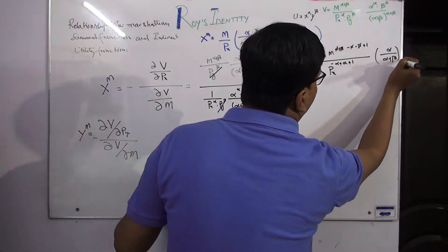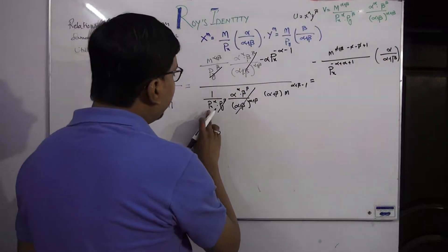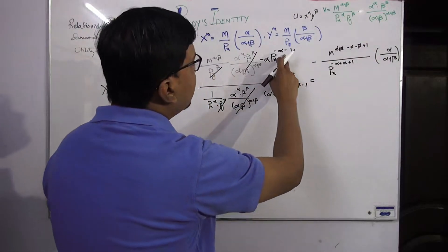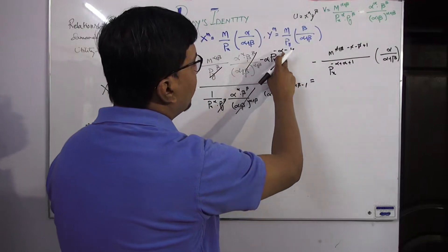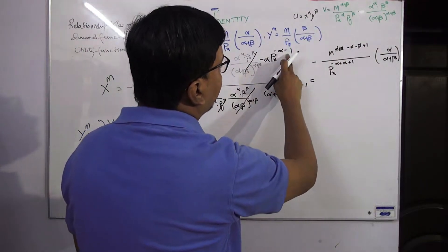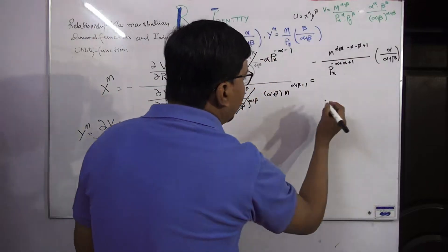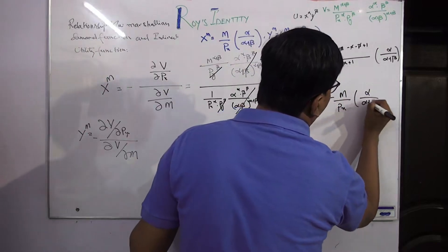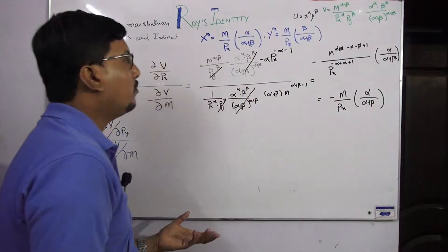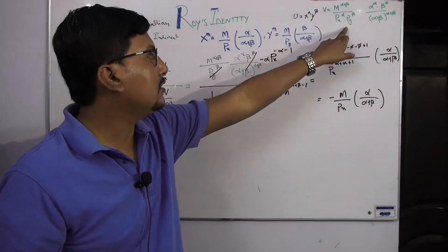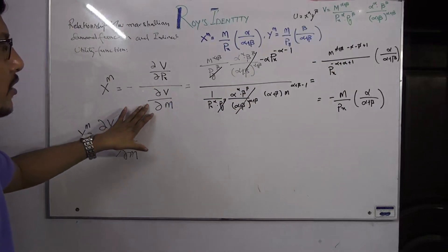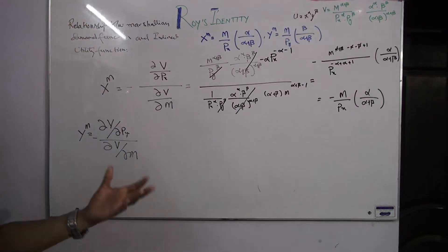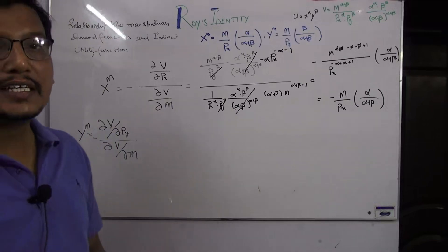For px: px^(−α) comes to the numerator, and with the additional (−1) exponent converting to (+1) in the denominator, we finally get the result: −m/px × α/(α+β). So if we have the indirect utility function and apply Roy's Identity, we can easily find the Marshallian demand function for x. This is the property that lets us directly obtain the Marshallian demand from the indirect utility function.